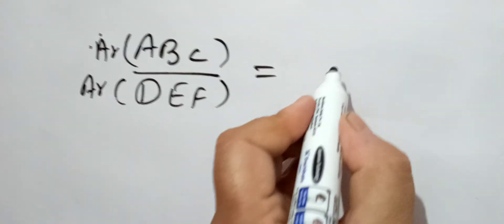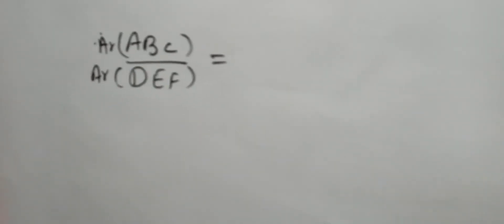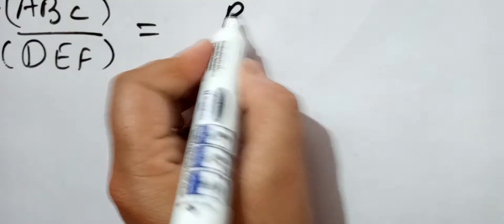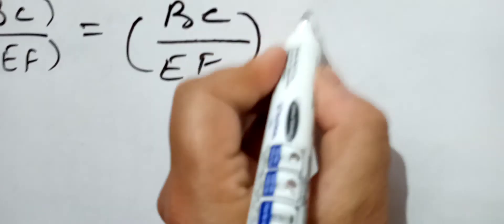The ratio is equal to BC by EF. This is the first step.